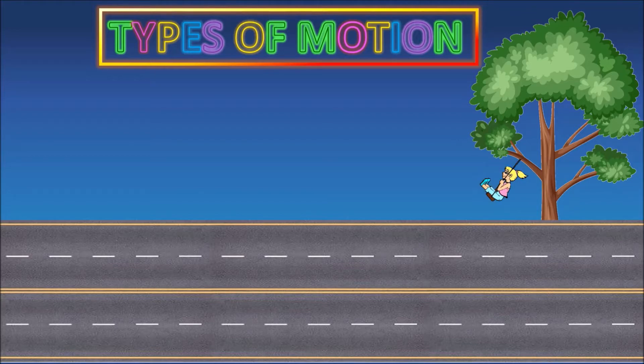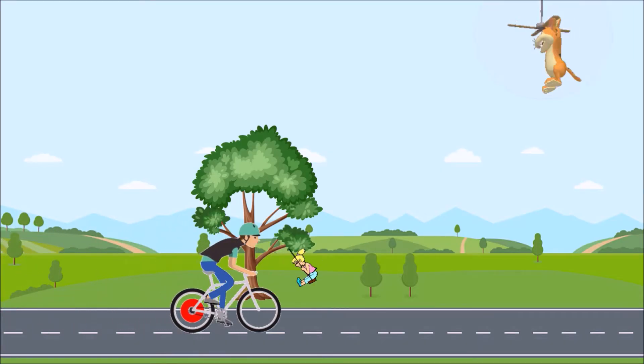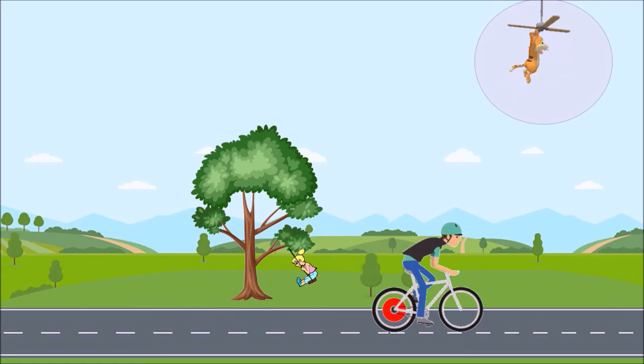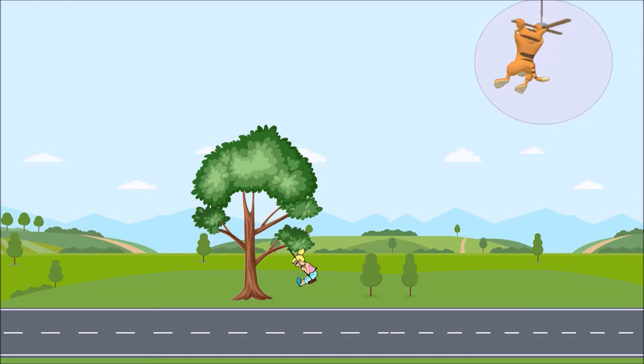But we can see there is some difference in their motion. The cyclist is moving nearly along a straight line. The blades of the fan are going round and round about its central rod. And the child? The child is swinging to and fro in a regular manner.